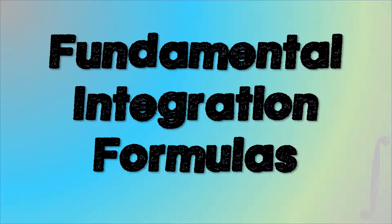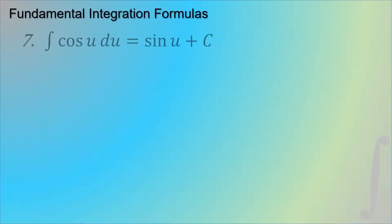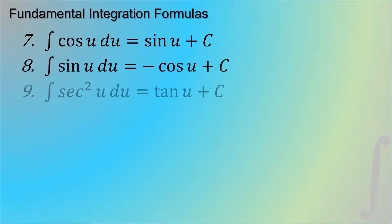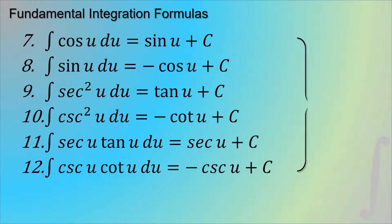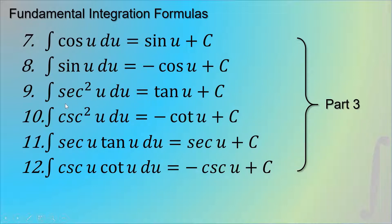Let us now proceed with the third part of the fundamental integration formulas, which are the trigonometric integration formulas. The first one is the integral of cos u du, which is equal to sin u plus C. The second one is the integral of sin u du, which is equal to negative cos u plus C.